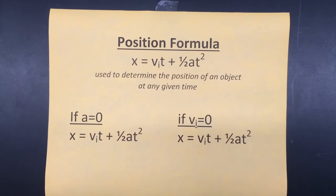The position formula x equals v_i t plus one-half a t squared is used to determine the position of an object at any given time.